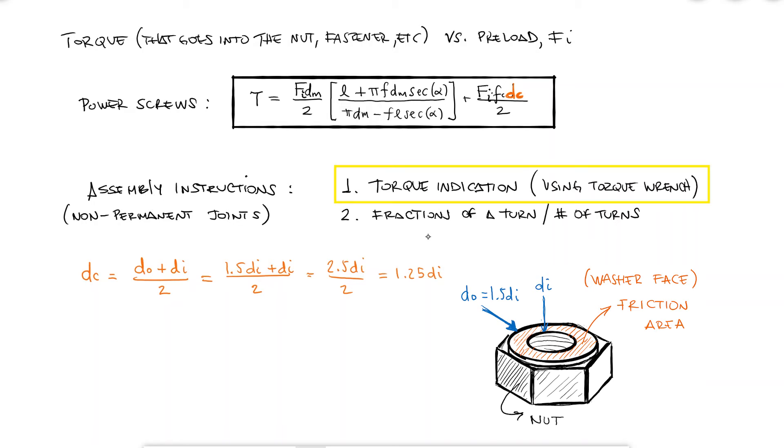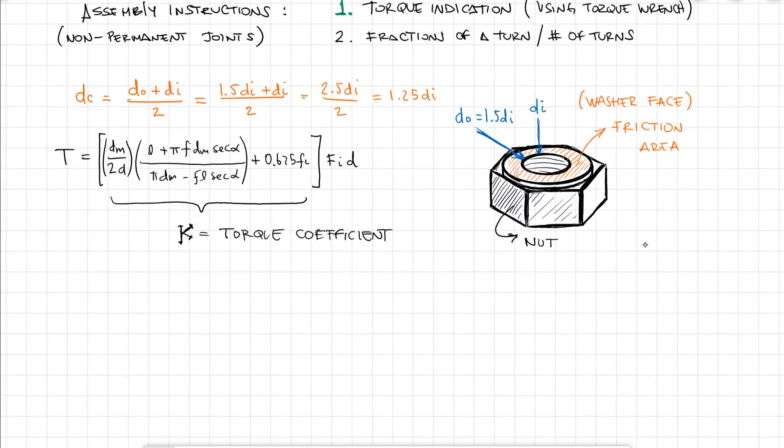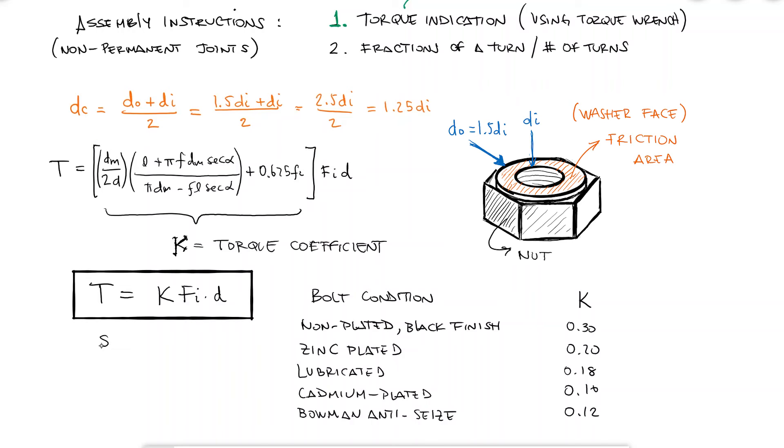If the assembly instructions indicate the torque you're supposed to use, solving for the preload is straightforward. If the number of turns is indicated, the process is slightly different. You can check how to find the preload value Fi for a given number of turns in the links in the description below. By substituting DC and rearranging terms, and by referring to the term in the brackets as the torque coefficient capital K, the torque equals K times Fi times D. This is sometimes useful because for conservative estimates, you can often find torque coefficients K for surface finishes or treatments like zinc plated, lubricated, anti-seize, saving you the extra long calculations for specific friction coefficients.